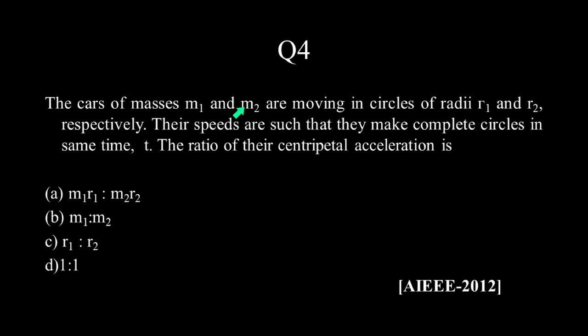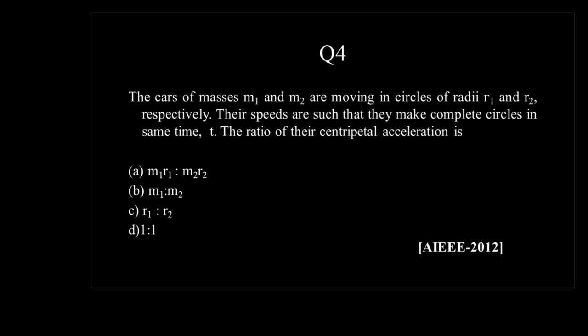Two cars of masses m1 and m2 are moving in circles of radii r1 and r2 respectively. The speeds are such that they complete full circles in the same time period T. We need to find the ratio of their centripetal accelerations.